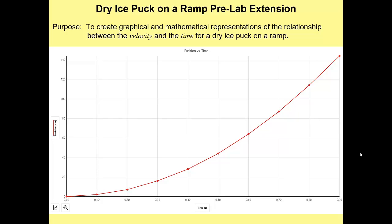Hello, everyone. So in the last couple of days, we've done a lab, a pivot, with the dry ice puck on the ramp, in which we measured the position of the puck after it had gone down the hill four different times. And hopefully, you got a graph that looks much like this one, a top opening parabola as a position time graph.